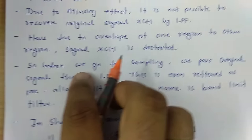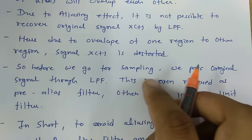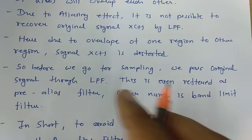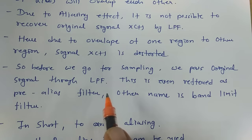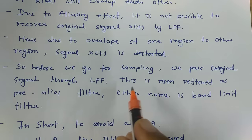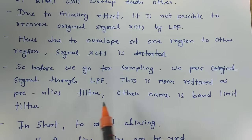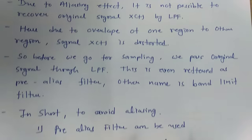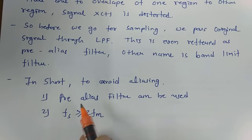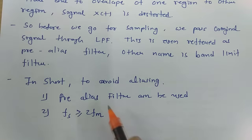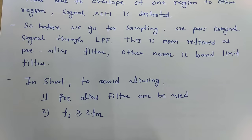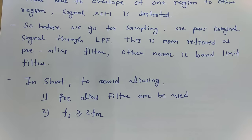If we pass the original signal through a low pass filter before sampling, we can avoid aliasing. This is referred to as a pre-aliasing filter, also called a band limiter filter. In short, to avoid aliasing, a pre-aliasing filter can be used, or one can keep fs greater than 2fm. These two approaches can be used to avoid the aliasing problem, and this is how we apply the sampling theorem in practice.